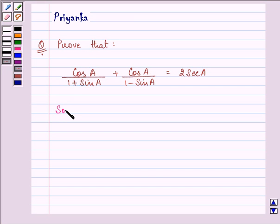Let us start the solution from our left hand side. And we have cos A upon 1 plus sin A plus cos A upon 1 minus sin A.